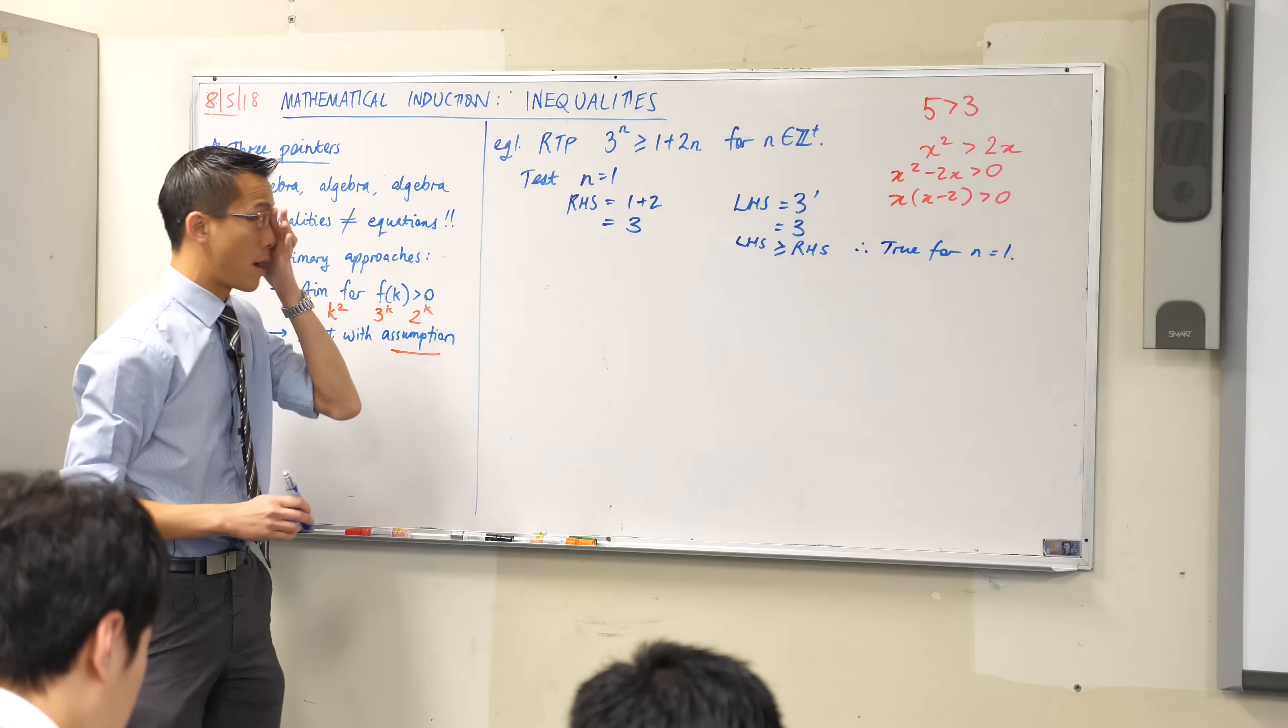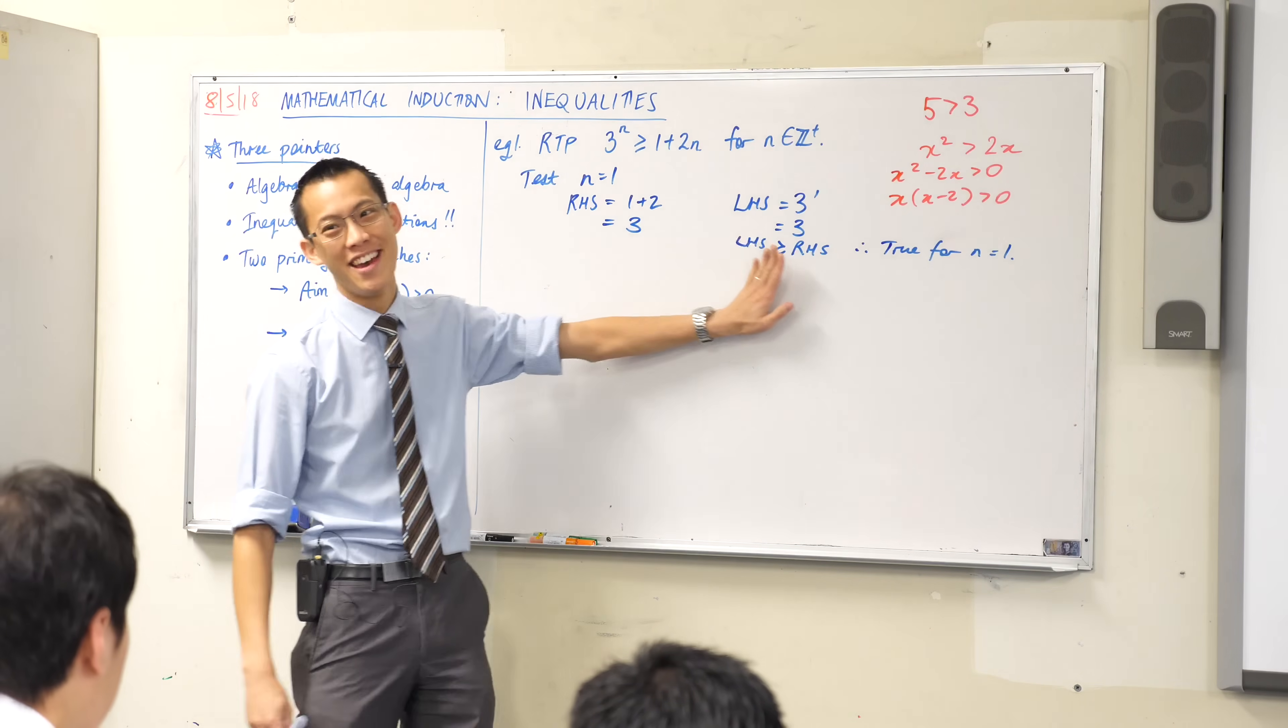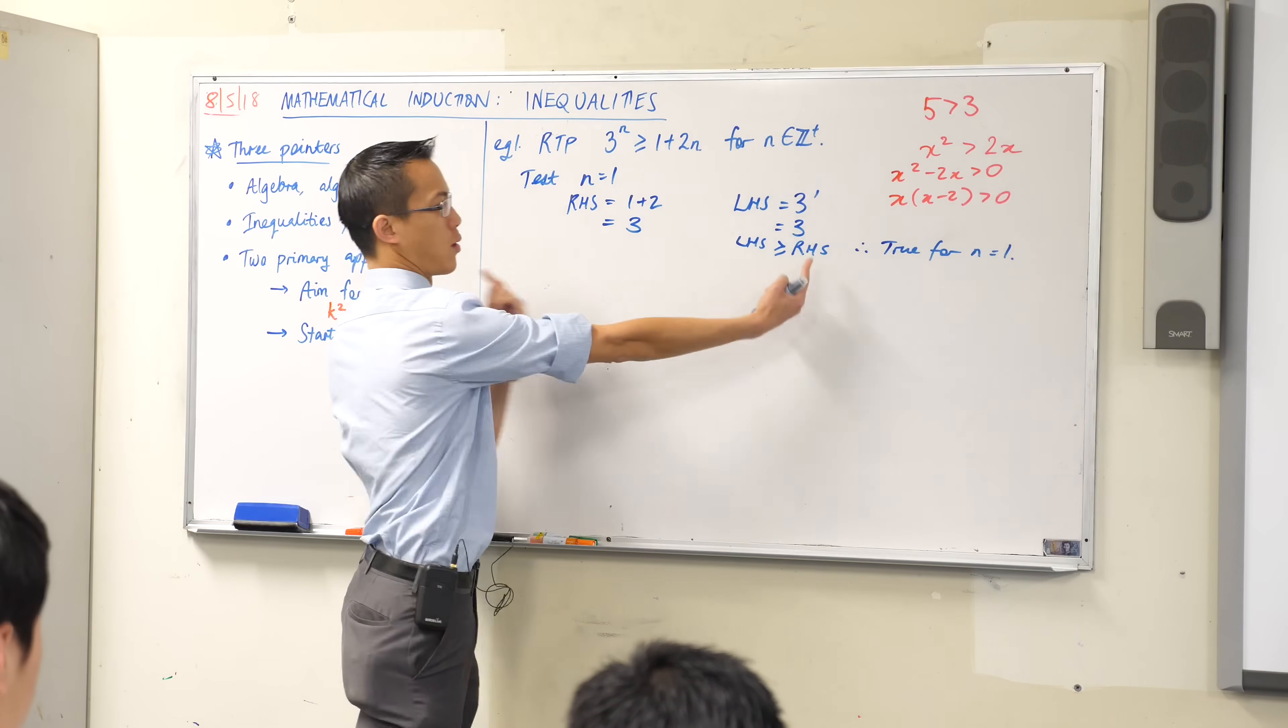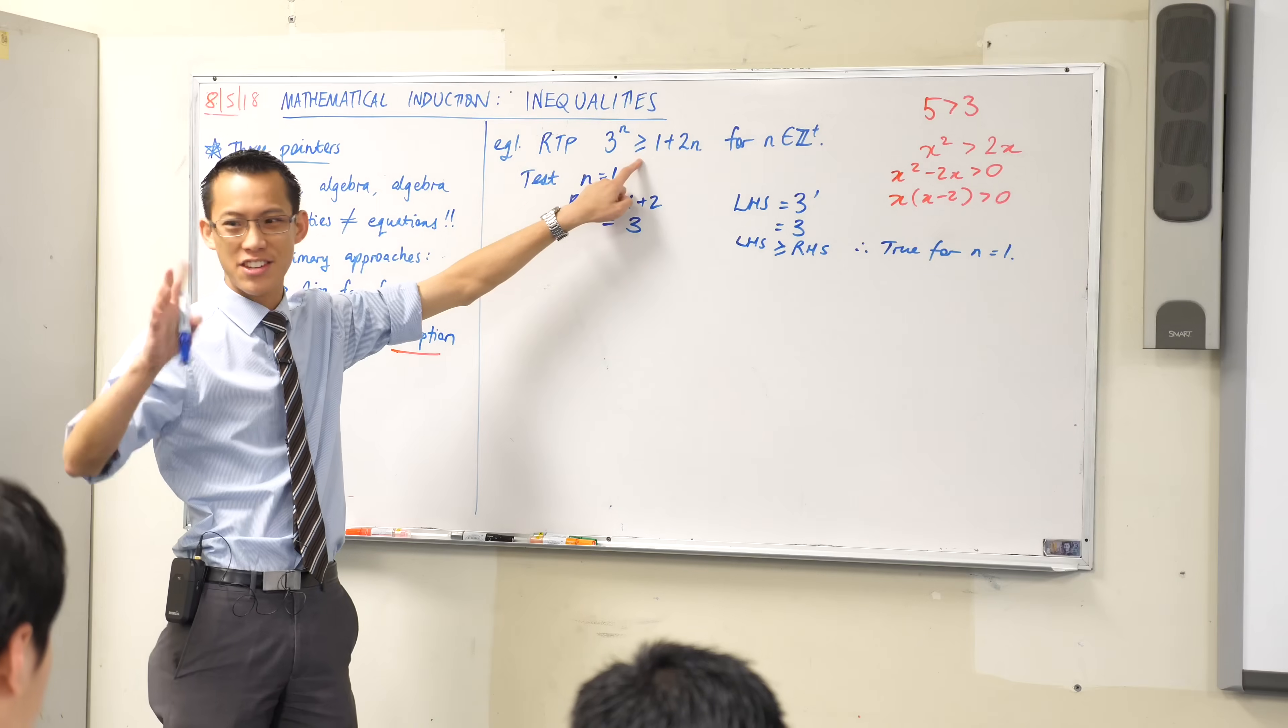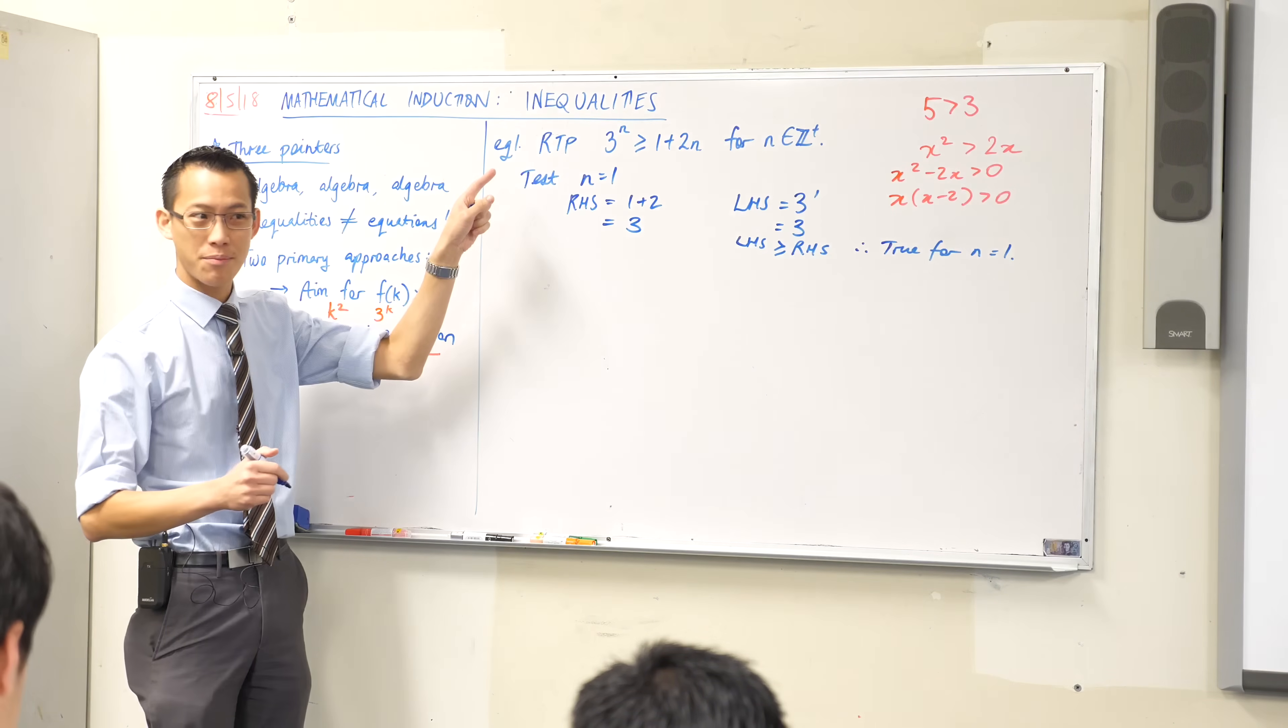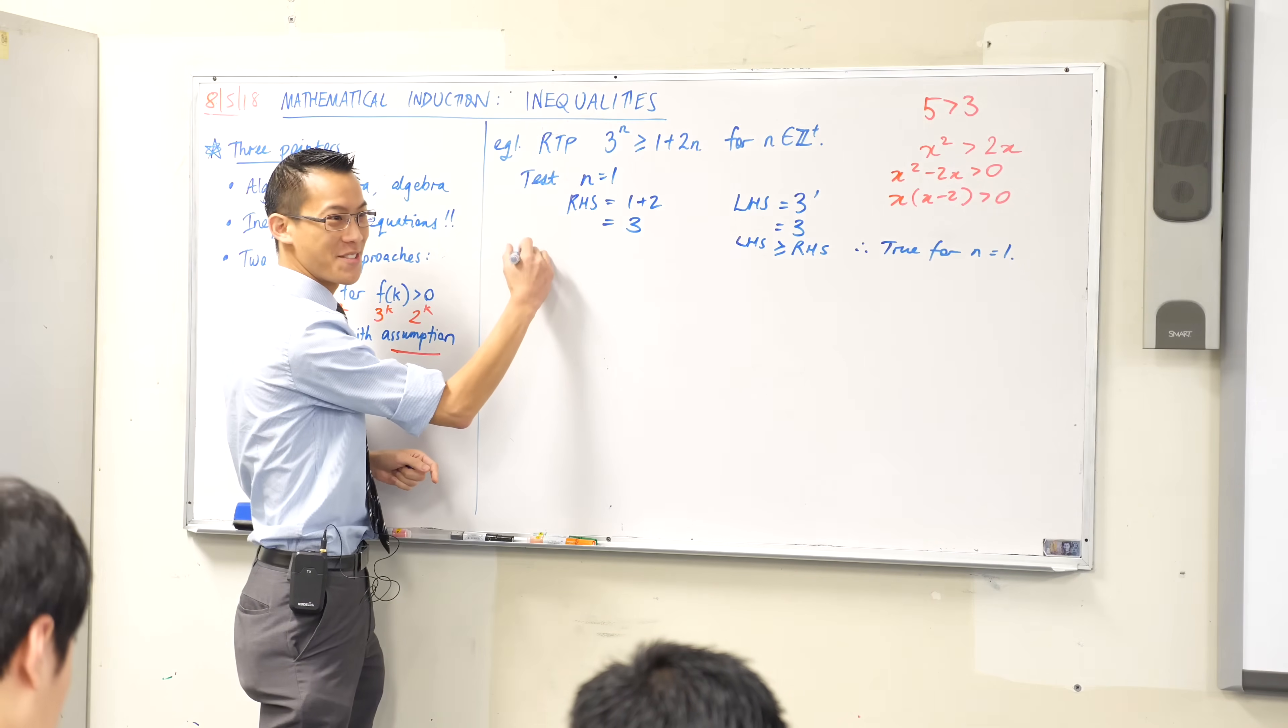Just for reference, the reason why I start with the right-hand side is so that my final line has the left on the left and the right on the right. If you started with the left-hand side, your inequality would be the other way around, and my brain starts fizzling out when I try to change things around. That was the first step, the test. What's the second step? Assume.